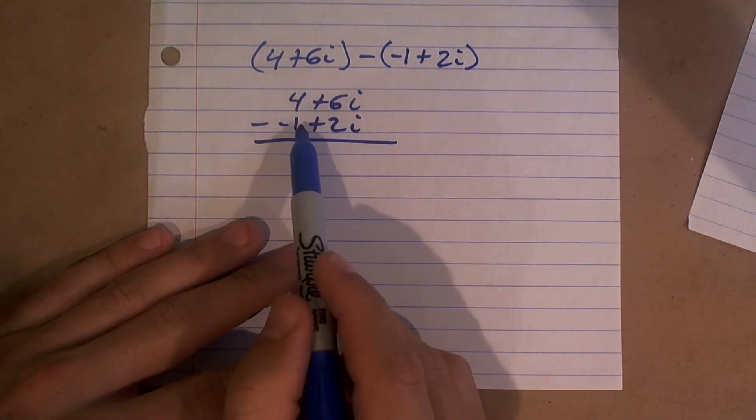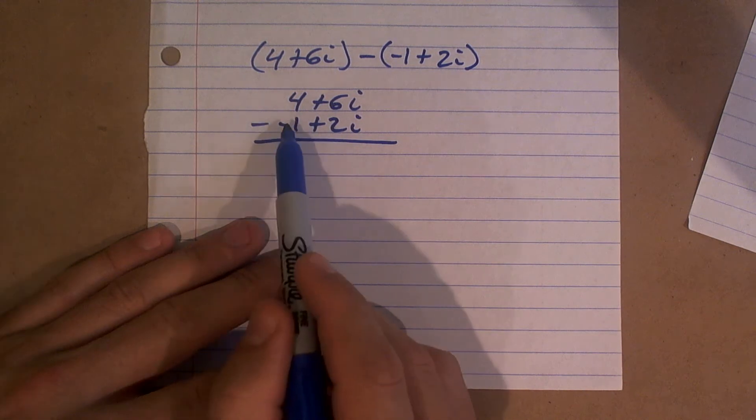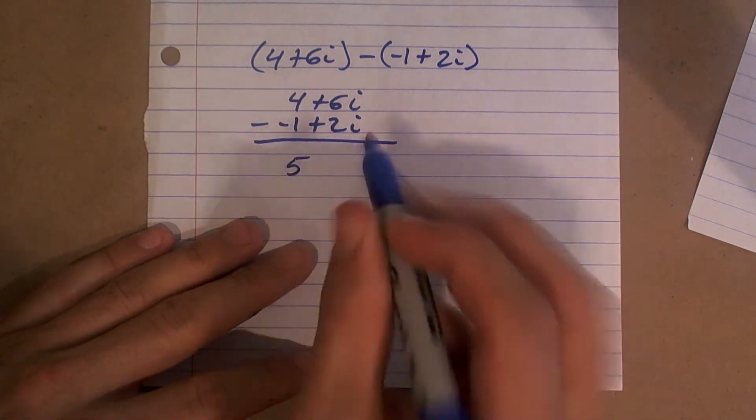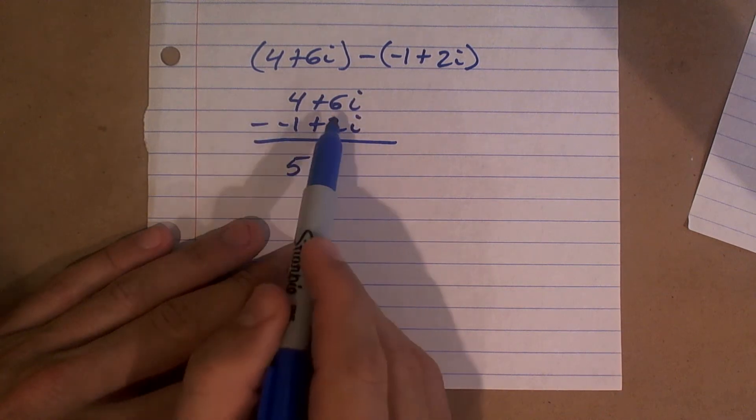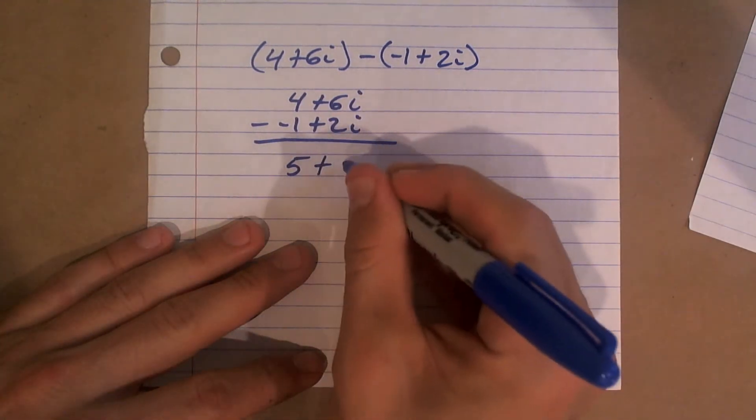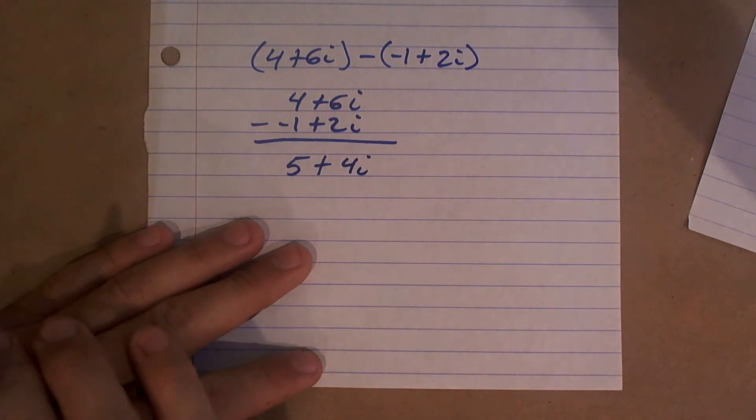4 minus negative 1, so minus a negative 1 is a double negative, which gives you 5. And then 6i minus 2i is going to give you positive 4i.